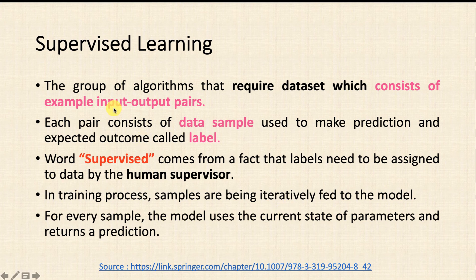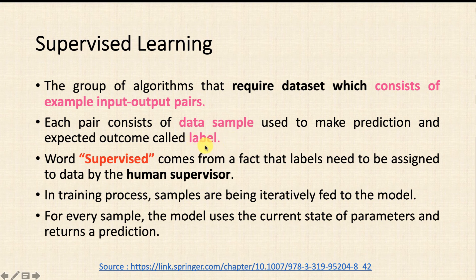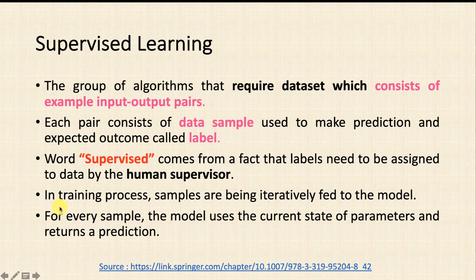Supervised learning is a group of algorithms that requires a dataset consisting of examples of input and output pairs. Each pair consists of data samples used to make predictions and expected outcomes that are labeled. In supervised learning it is very important that you must have labeled data. The word 'supervised' comes from the fact that the labels need to be assigned to data by a human supervisor. The best example is a classroom where a teacher is teaching you.